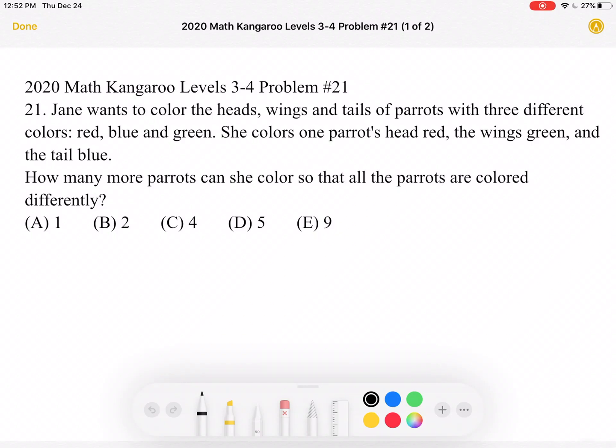This is the 2020 Math Kangaroo Levels 3-4 Problem Number 21. Jane wants to color the heads, wings, and tails of parrots with three different colors: red, blue, and green.